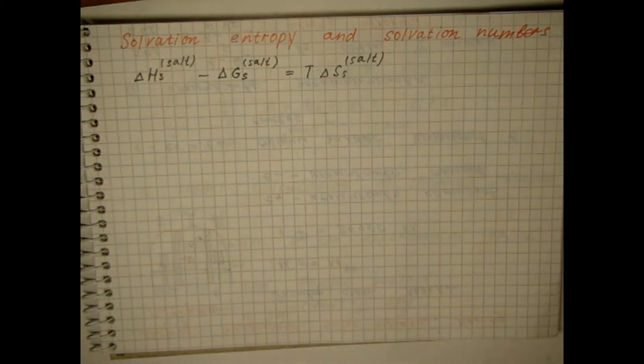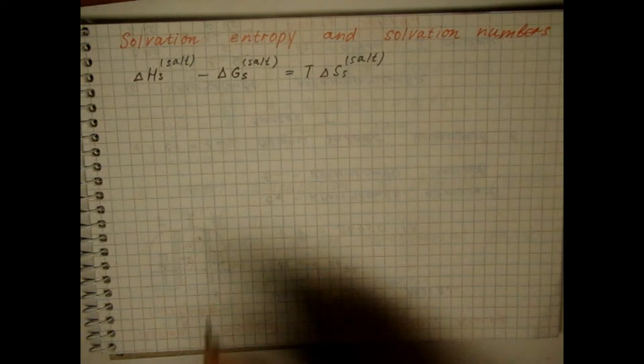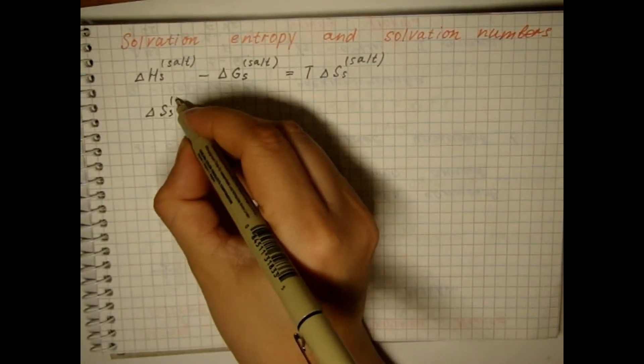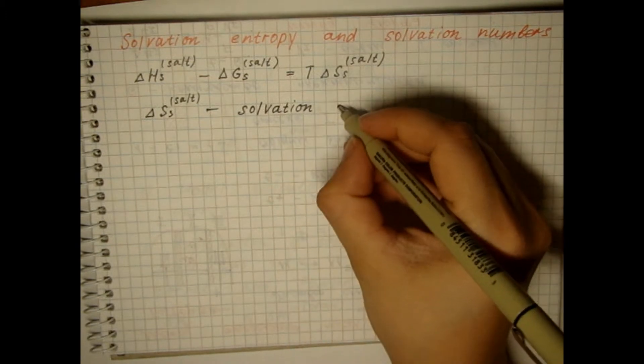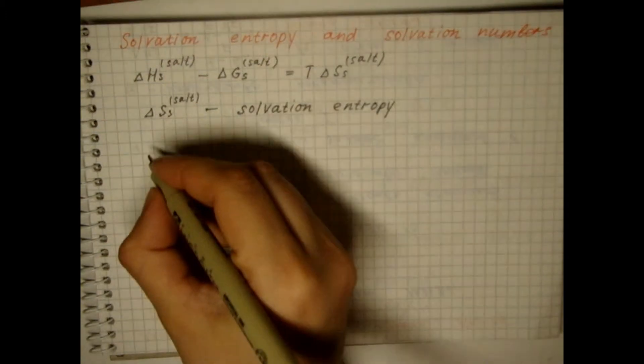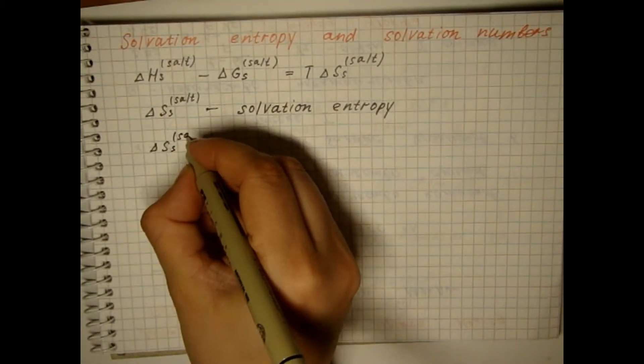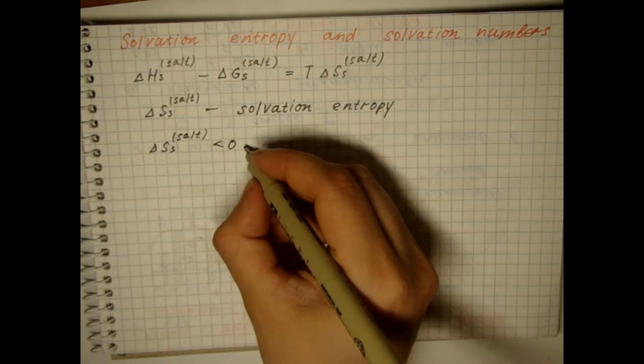The difference allows to calculate the solvation entropy. The entropies of salt hydration are negative.